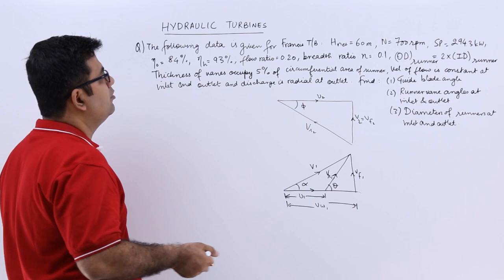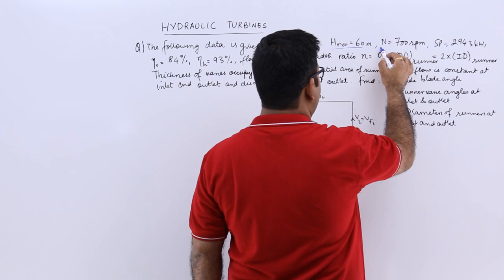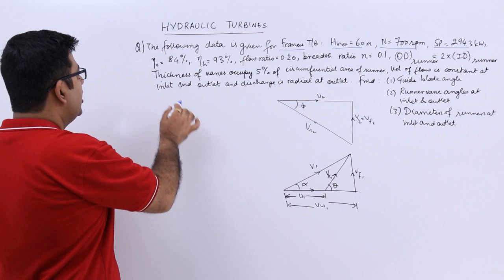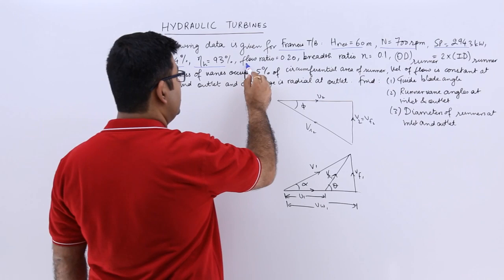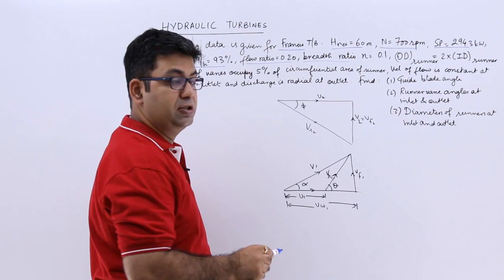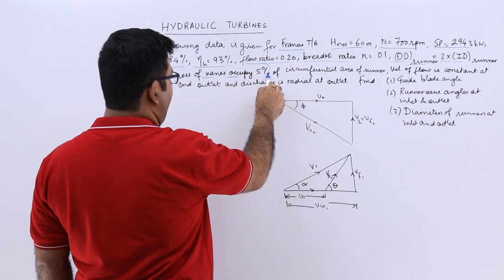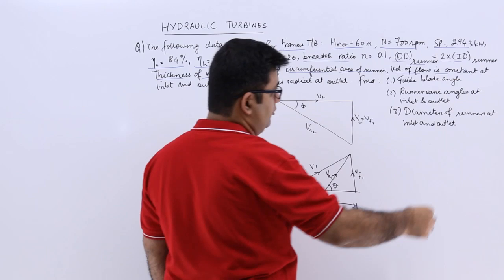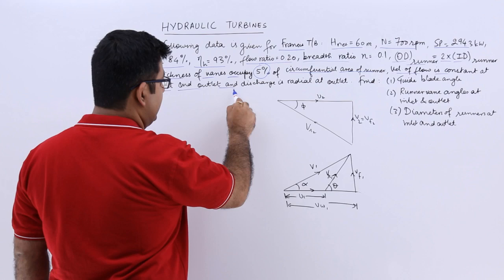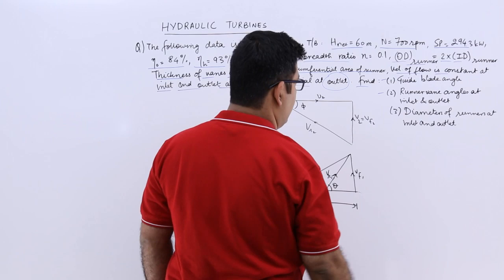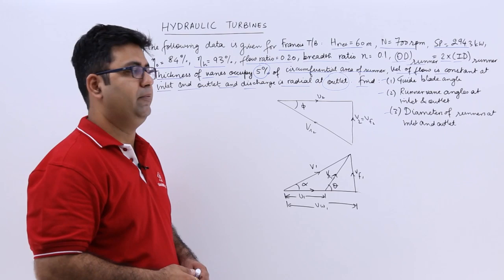Now let's look at a question on Francis turbine. The following data is given: net head is 60 meters, RPM is 700, shaft power is 294 kilowatts, overall efficiency 84%, hydraulic efficiency 93%, flow ratio is 0.2, breadth ratio (n) is 0.1. The OD of the runner equals 2 times the ID. Thickness of vanes occupies 5% of circumferential area. Velocity of flow is constant (VF1 = VF2) and discharge is radial at outlet. Find the guide blade angle, runner-vane angles at inlet and outlet, and diameters D1 and D2.